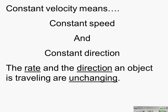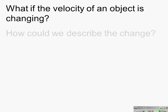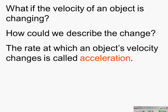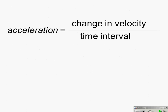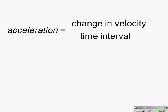But what if the velocity of an object is changing? We've already talked about our third vector: acceleration. The rate at which an object's velocity changes is called acceleration. Not the rate at which it is accelerating, but the rate at which the velocity is changing. So acceleration equals the change in velocity divided by the time interval in which that change took place.